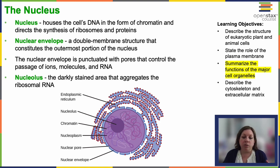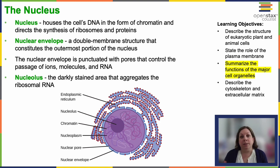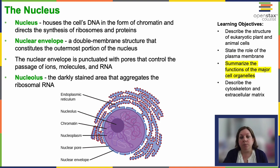The nucleus's structural integrity is maintained by a structure called the nuclear envelope. It's a double lipid bilayer dotted with nuclear pores that allow controlled molecular exchange between the nucleus and the cytoplasm. This is where mRNA transcripts move from inside the nucleus out into the cytoplasm and even to the endoplasmic reticulum.